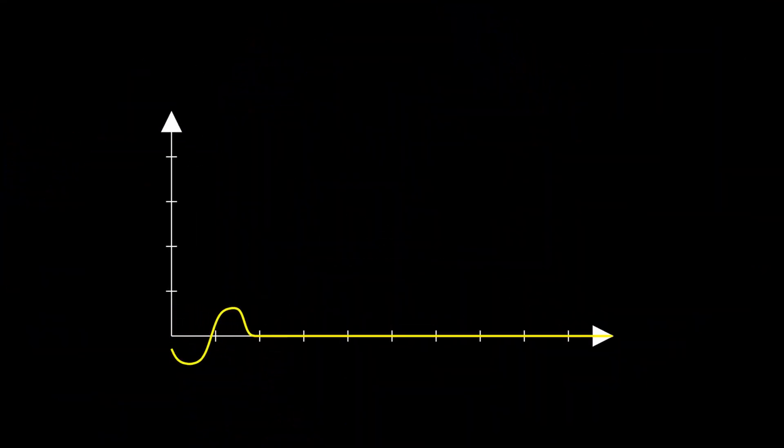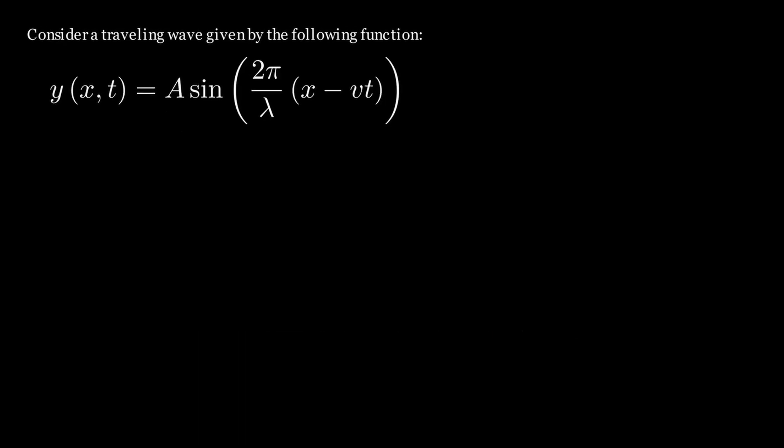Let's move on to analyzing traveling waves. Consider the traveling wave given by the following function, where lambda is the wavelength of this traveling wave. This equation essentially comes from the wave equation. But let us now see how this can translate into the wave equation itself.